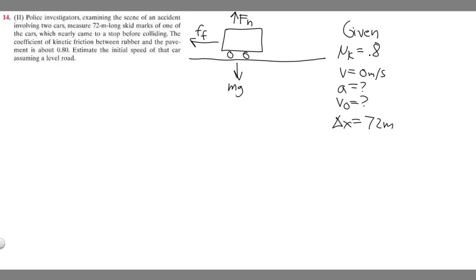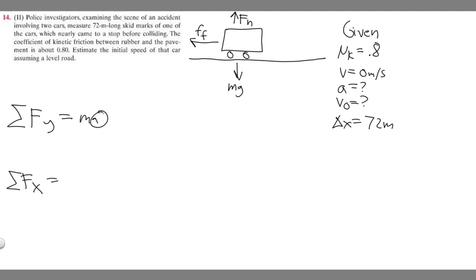The next thing we want to do is find the sum of the forces in the x and y directions. In the y direction, the sum of forces equals 0, because the car is not moving in the y direction, so acceleration is 0 there. In the x direction, the sum of forces equals ma, because we're going to have some acceleration.